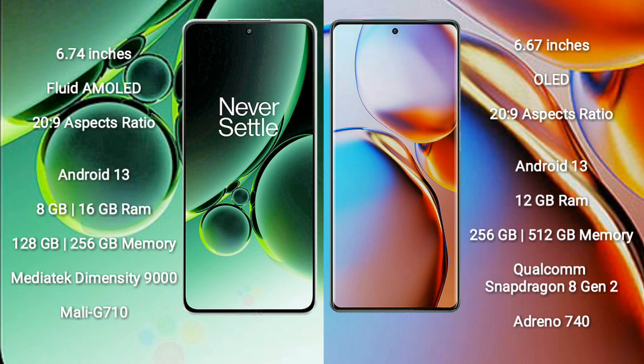OnePlus Nord 3 comes with 8GB or 16GB RAM, 128GB or 256GB internal storage, a MediaTek Dimensity 9000 processor, and GPU Mali-G710.